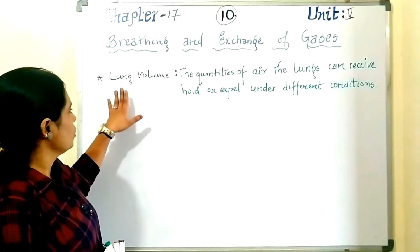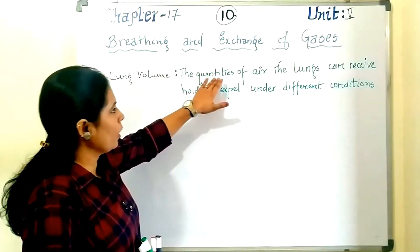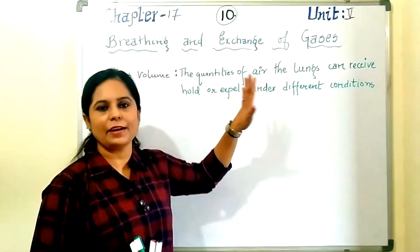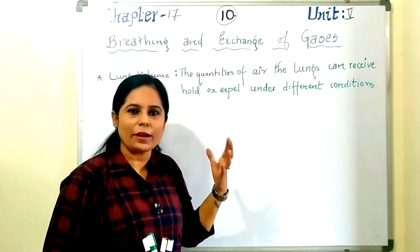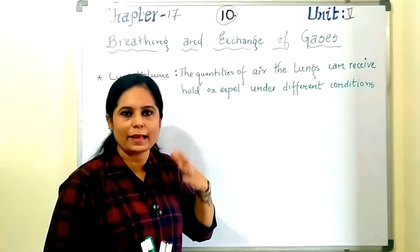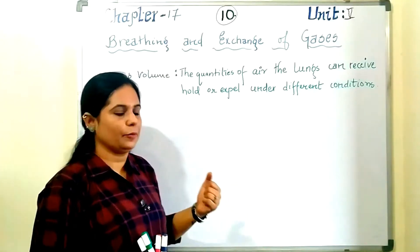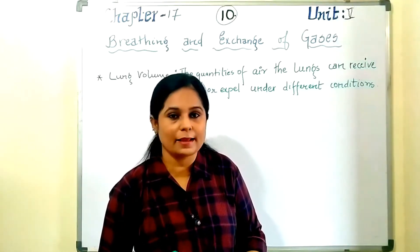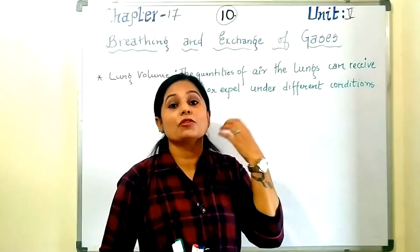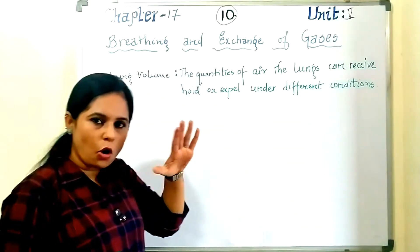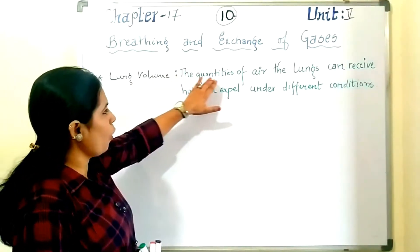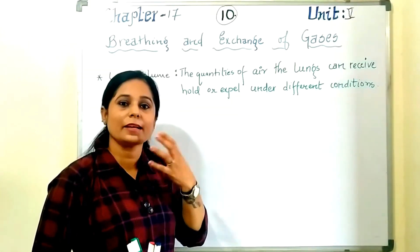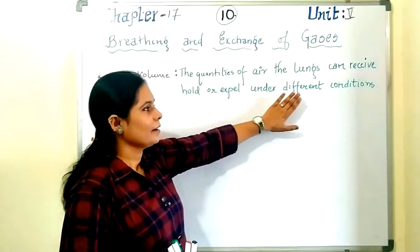So what is lung volume? It is the quantities of air the lung can receive, hold, or expel under different conditions. Under normal conditions we have tidal volume — that is the normal inspiration and exhalation of air. Then there is forcible inspiration, which is inspiratory reserve volume, and forcible expiration. All such things come under lung volume.